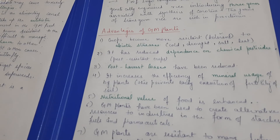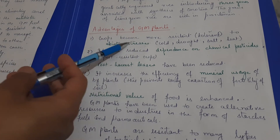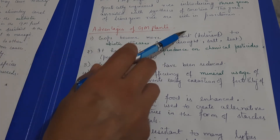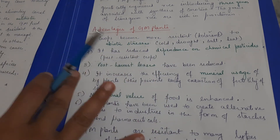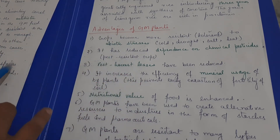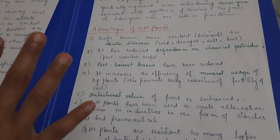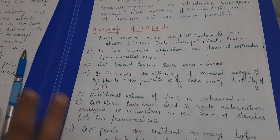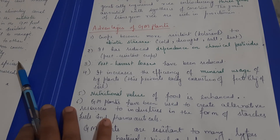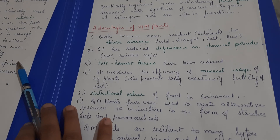Now we look at the advantages of genetically modified plants. GM crops become more resistant to abiotic stresses such as cold, drought, salt, and heat — conditions that would harm normal crops. GM crops also reduce the need for chemical pesticides, since plants that are genetically modified to resist insects and pests do not need pesticide spraying. Post-harvest losses are also reduced. GM crops are more efficient in terms of mineral use.